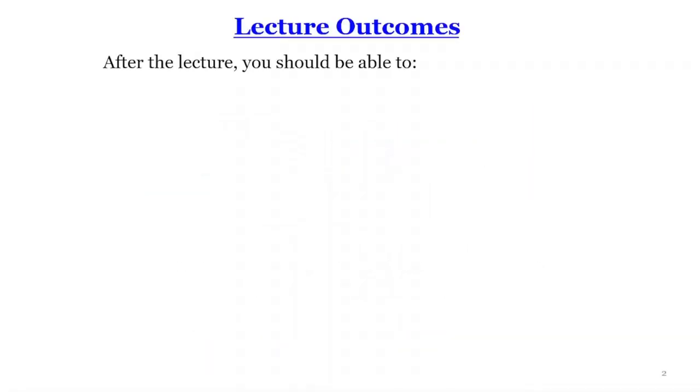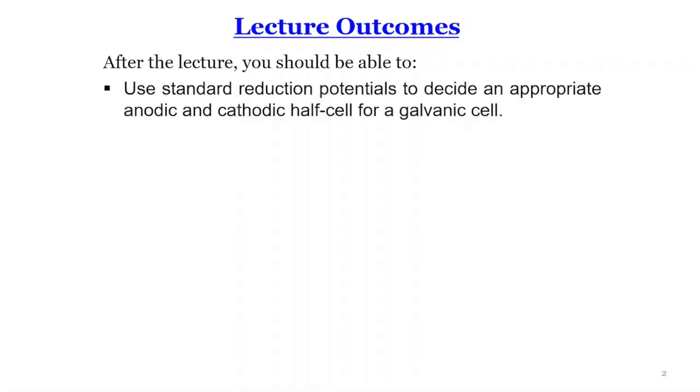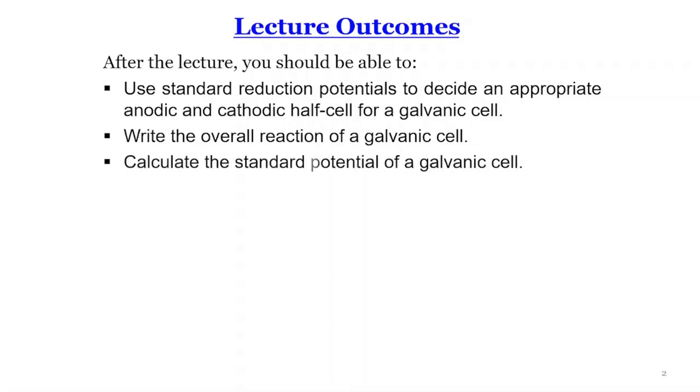After the lecture, you should be able to use standard reduction potentials to decide appropriate anodic and cathodic half cells for a galvanic cell, write the overall reaction of a galvanic cell, calculate the standard potential of a galvanic cell, and calculate the standard Gibbs free energy of a galvanic cell.